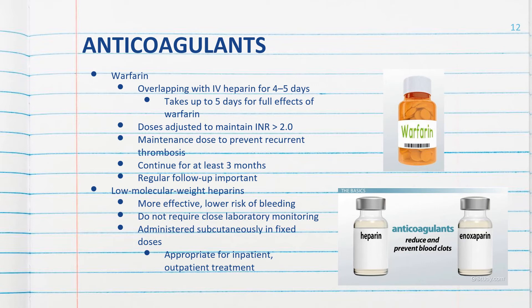Let's look more closely at warfarin. Warfarin is Coumadin, and we need to overlap it with IV heparin for four to five days — it does take five days for the full effects of warfarin to kick in. We monitor the PT because we may need to make dose adjustments. The Coumadin needs to be adjusted to maintain an INR of greater than 2.0. A normal INR without any anticoagulant is 1.0, so we want the INR to be greater than 2.0 to prevent recurrent clot formation.